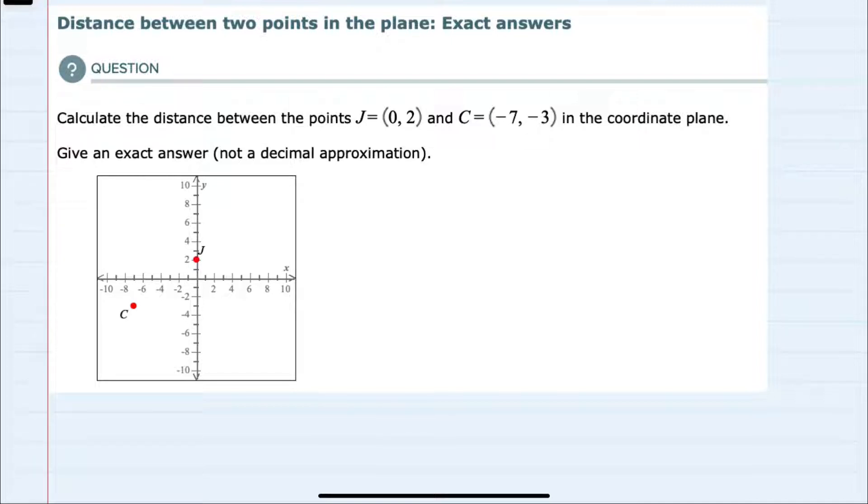We're asked to calculate the distance between two points J and C and to give the answer as an exact value. We'll start by recalling the distance formula, which says the distance between two points is equal to the square root of x2 minus x1 squared plus y2 minus y1 squared.